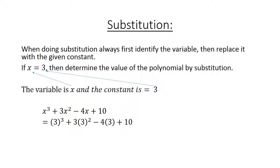Minus 4, substitute the x with 3, plus 10. Equals 27 plus 27 minus 12 plus 10 equals 52.